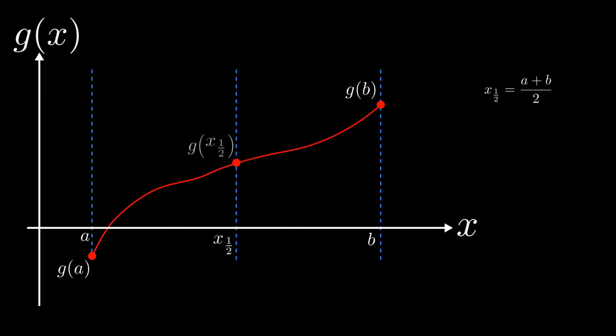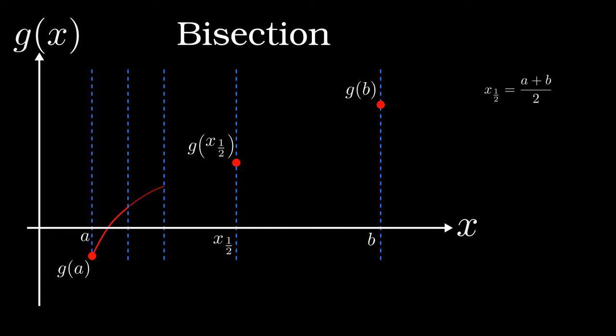First of all, it's possible to move to the halfway point in x and evaluate the function there. Based on its sign, the root is then either to the left or to the right of this point. This is said to be a bisection of the original interval. This method can then be repeated ad infinitum, just like Achilles and the tortoise, or at least until the interval is small enough to be suitable. However, it can take quite a while to get as close to the root as you might like.